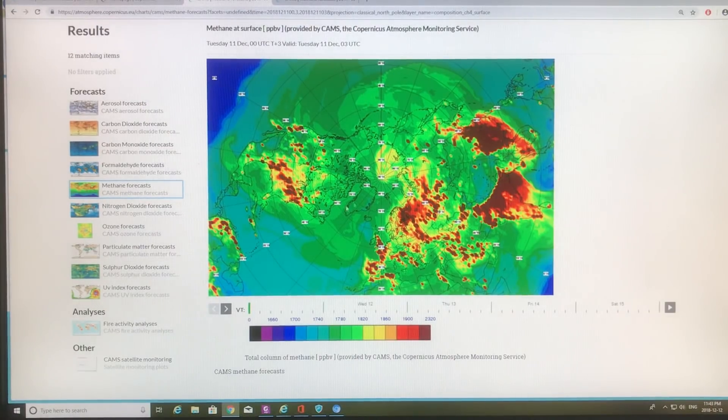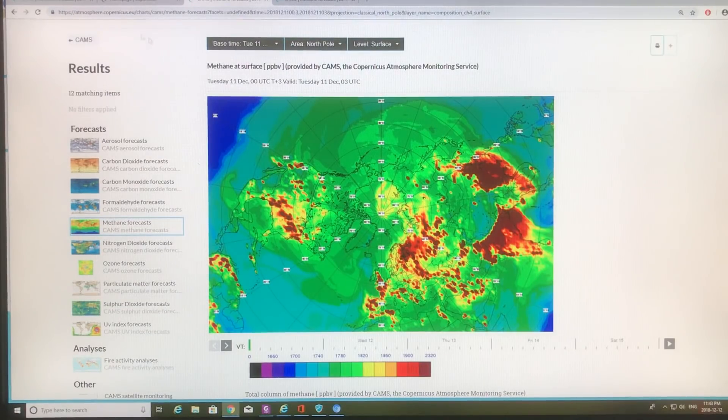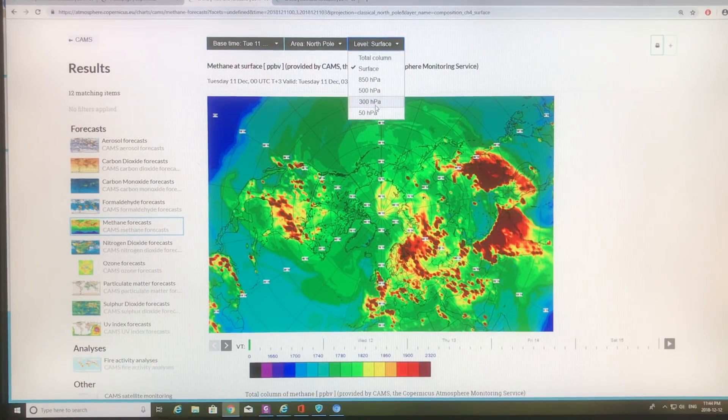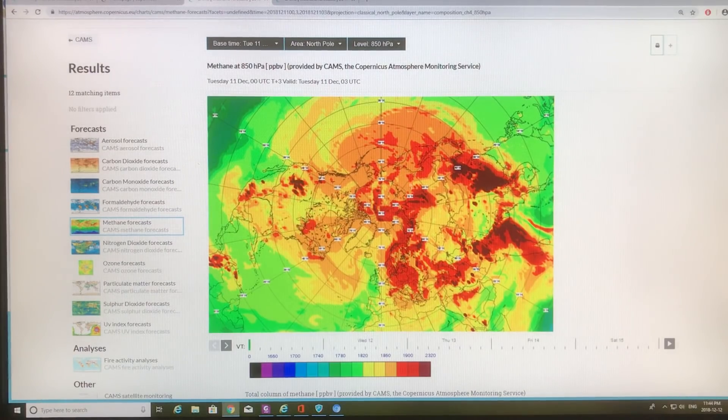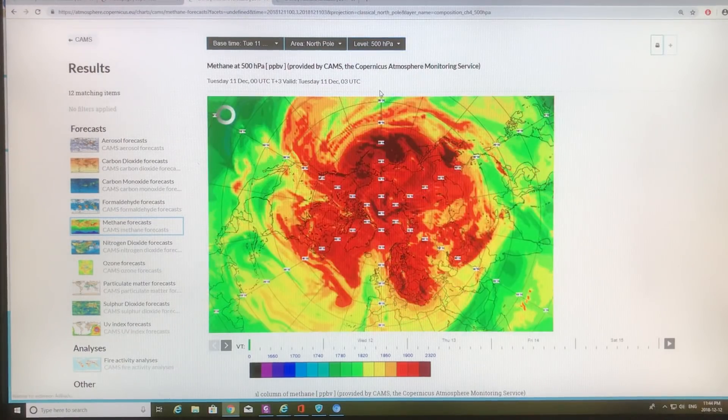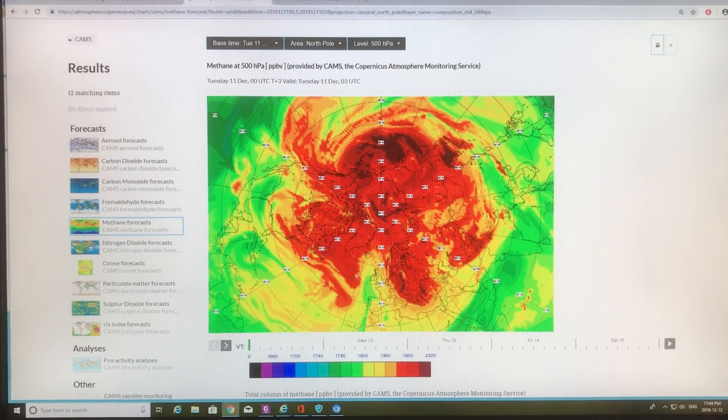Continuing from my past video, what we have here is the methane forecasts from the Copernicus atmosphere satellite data. We're looking at the North Pole regions, and the levels, this is at the surface. Now let's start going up. This is about 1.5 kilometers off the surface, 850 hectopascals of pressure. The hot spots are starting to disperse, and the methane is kind of spreading out. As we go to 500 hectopascals, just about halfway up the atmosphere, you can see the methane takes on a more circular pattern, and this is driven by the jet streams and the general circulation around the pole.